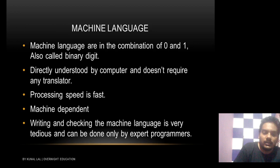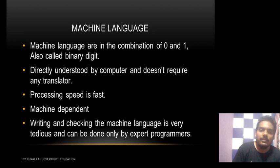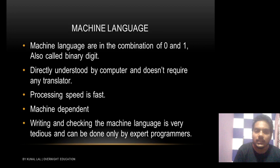Machine language does not require any translator. The processing speed is fast since there is no translator — no time is wasted in translation processing. That is why processing speed is fast in the case of machine language. It is machine dependent, meaning it can be done only by expert programmers, and machine language cannot be written easily.